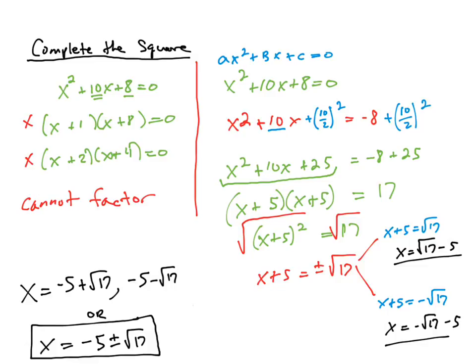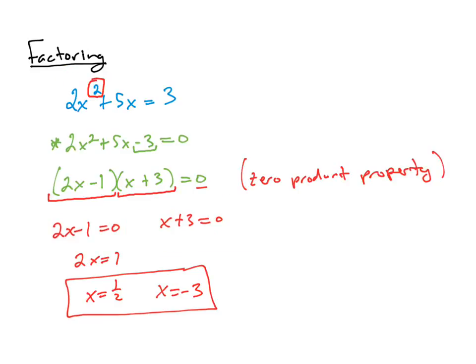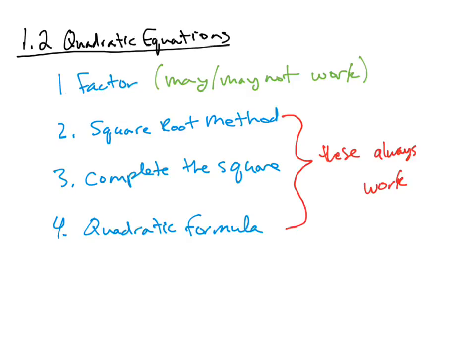Before we move on: while this original equation was not a perfect square on both sides, by completing the square we turned it into a perfect square on both sides so that we could take the square root of each side. I want to clarify the earlier statement about the three methods that always work — the square root method kind of has an asterisk, because using completing the square, we go through the square root method to get to our final answer. So when we complete the square, that gets us to the square root method to allow us to solve the quadratic equation.